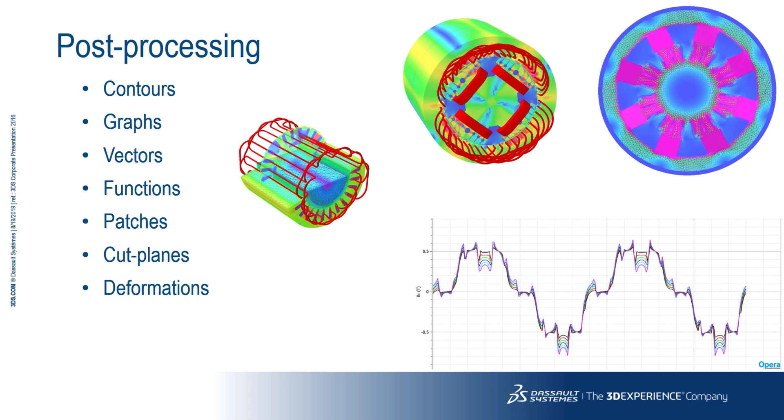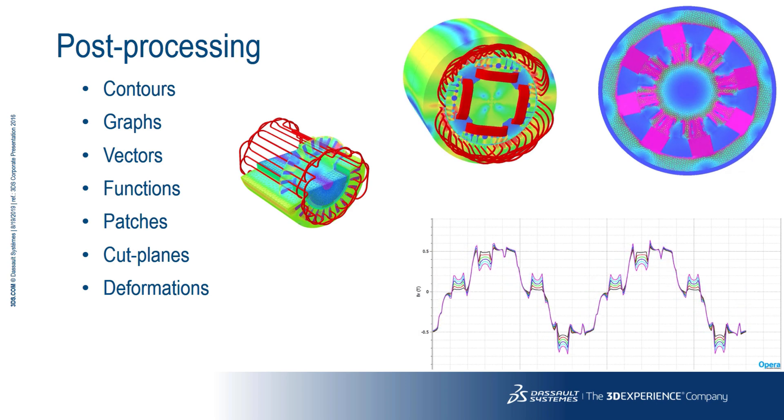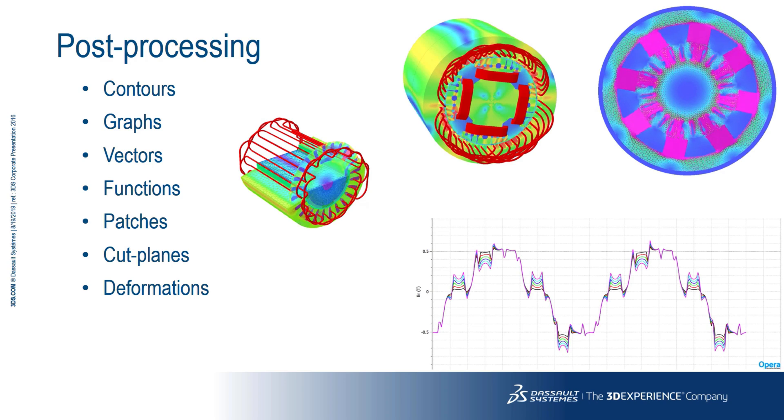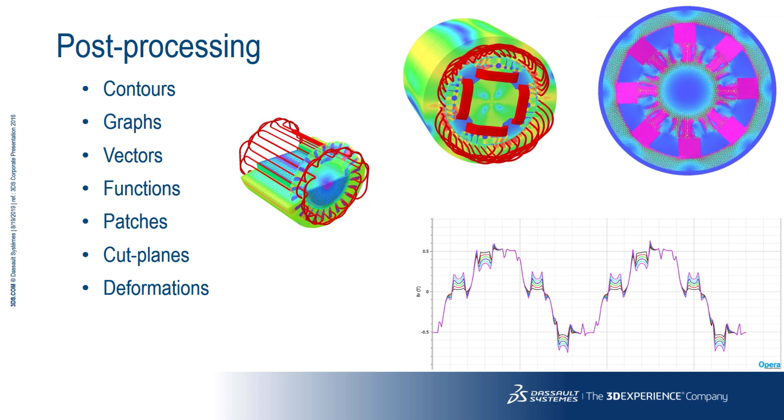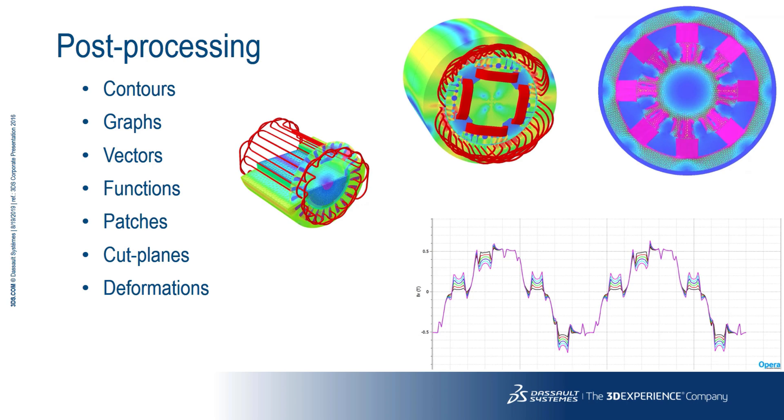Opera's post processor offers the user all the functionality necessary to make informed design decisions from interrogation of the results database. It offers, amongst other things, contours, graphs, vectors, patches, cut planes and deformed shapes.